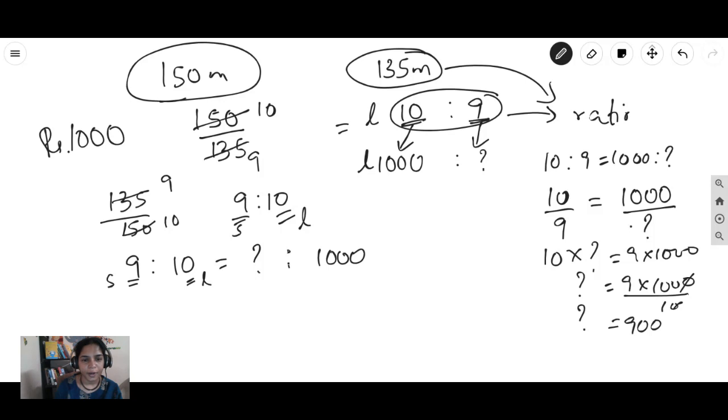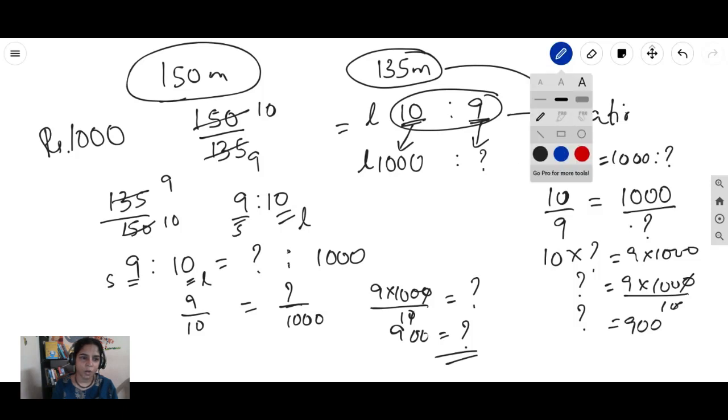Thereby you got it correctly. Now you can always do the same thing. 9 by 10 is equal to question mark by 1000. When you do cross multiply, what happens? You just take the 1000 here. So 9 into 1000 by 10 is equal to question mark. The 10 was down itself. So you get 900. See, both the ways you get the same thing. But the very important thing, very important thing is, whatever quantity you are taking, the same quantity has to be represented in the other fractions first part, other ratios left side. That is very important.